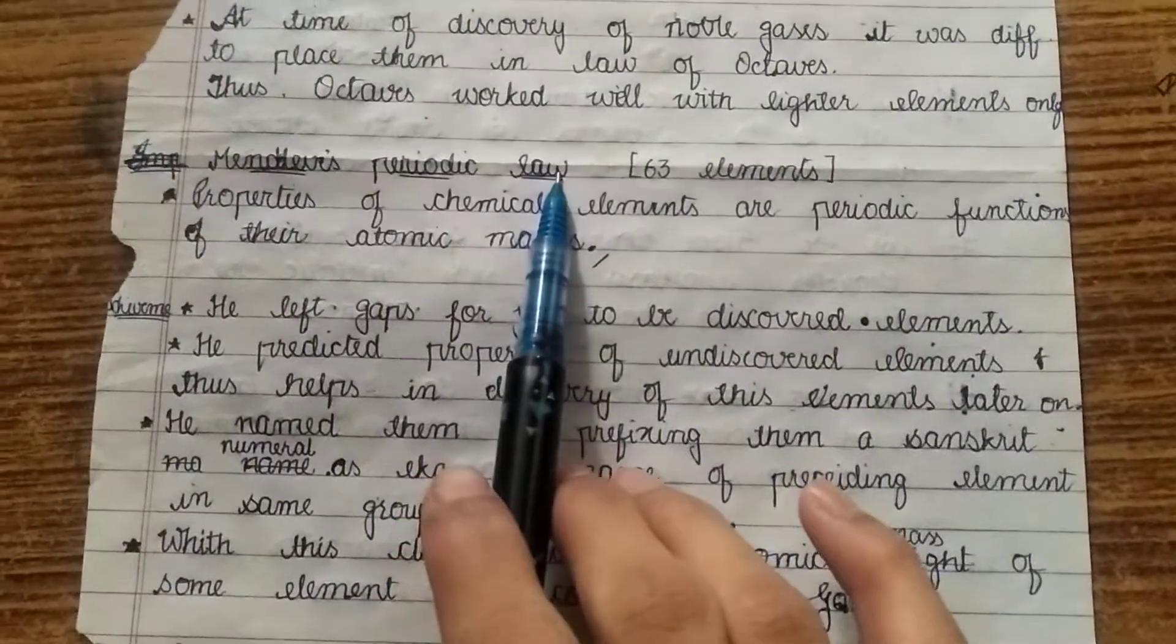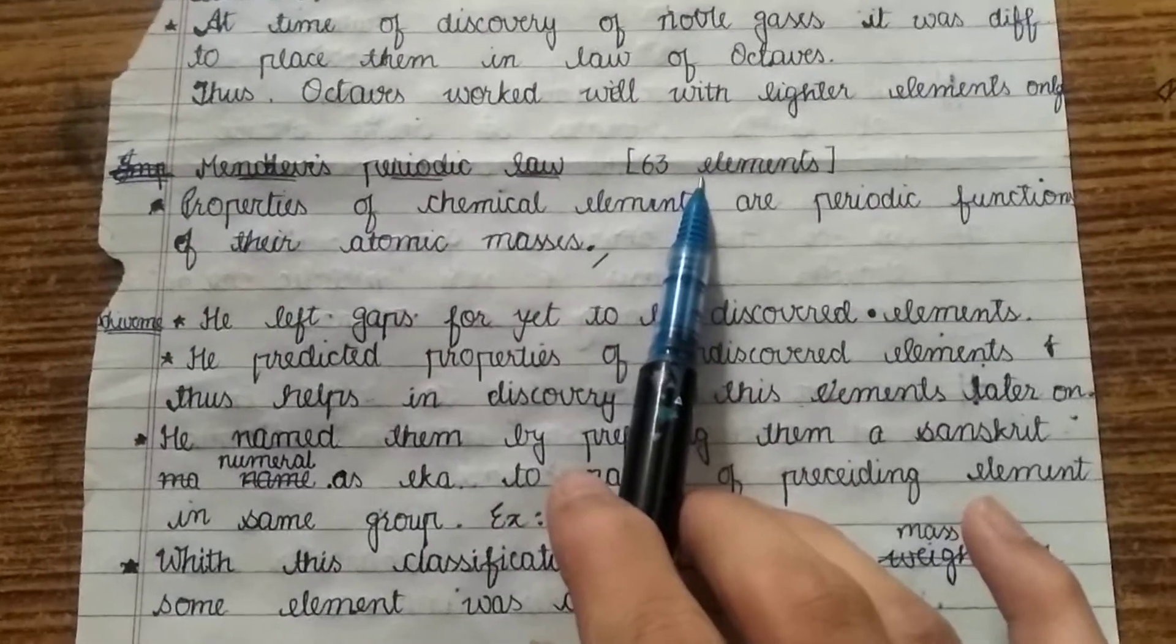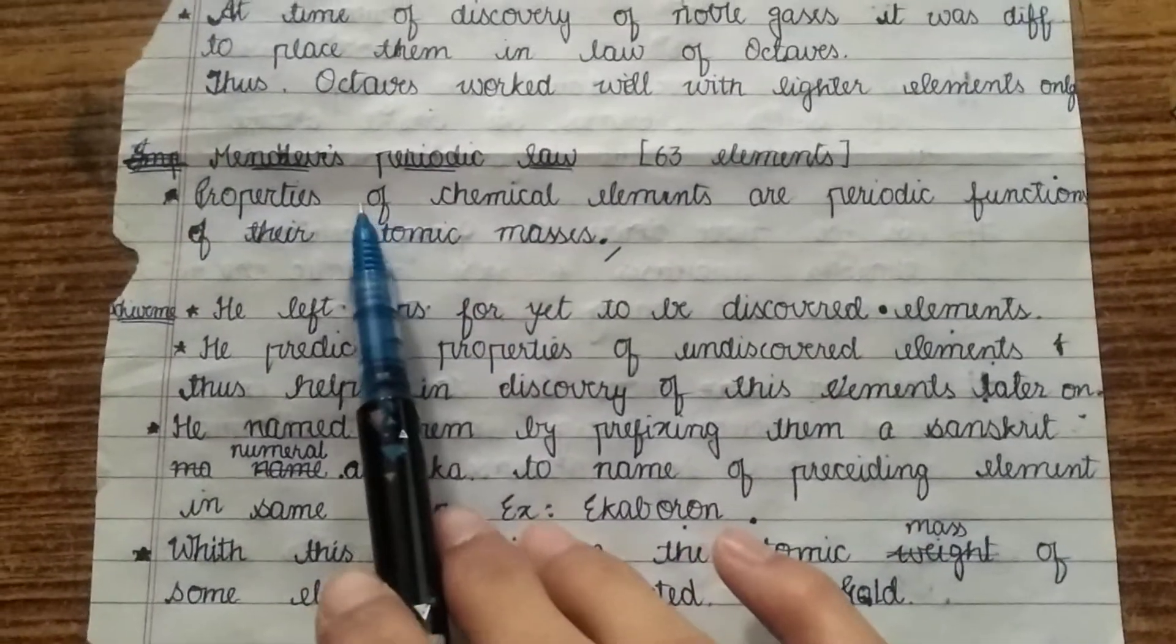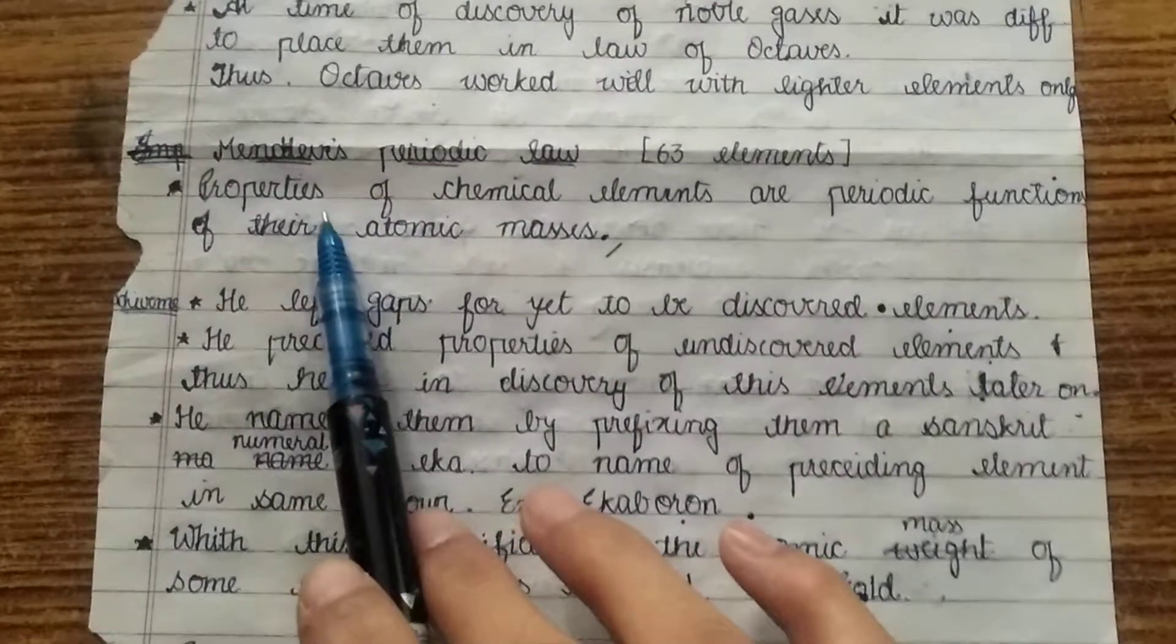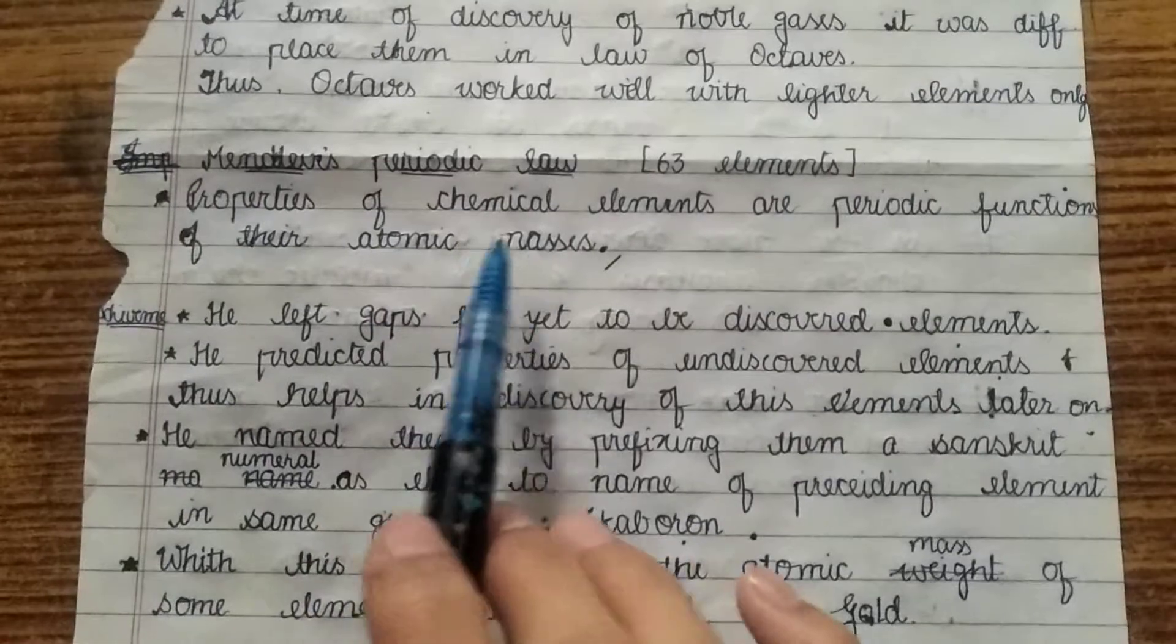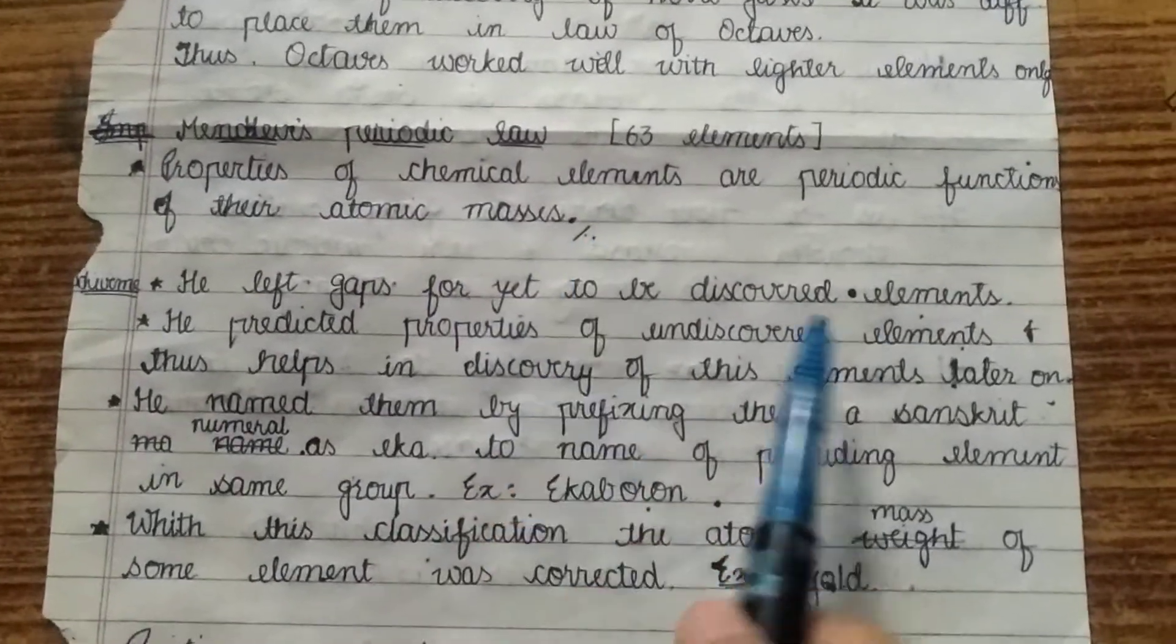Next is Mendeleev periodic law. At that time 63 elements were discovered. First is the law of Mendeleev. He stated that the properties of the chemical elements are the periodic function of their atomic masses, of the atomic masses. This you can learn.